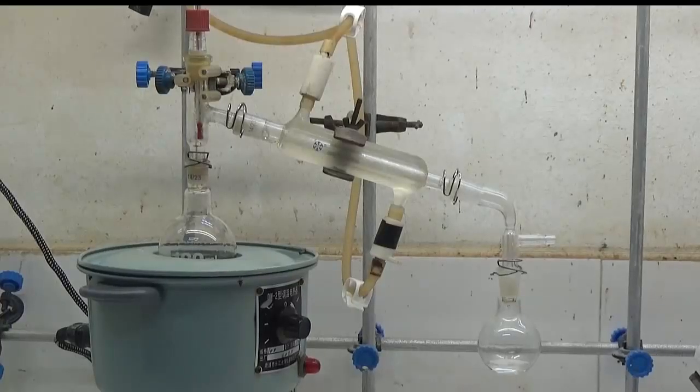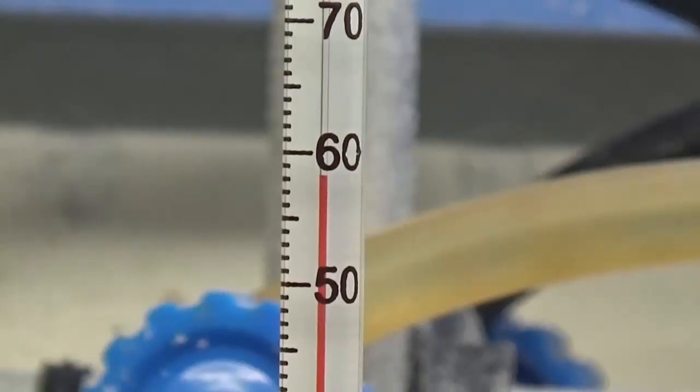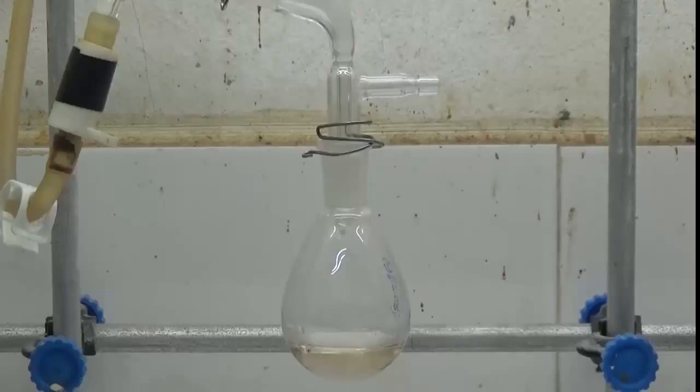Filter again and distill dichloromethane and furfural. The boiling point for furfural is 162 degrees Celsius. Collect the distillate at 155 to 165 degrees Celsius.